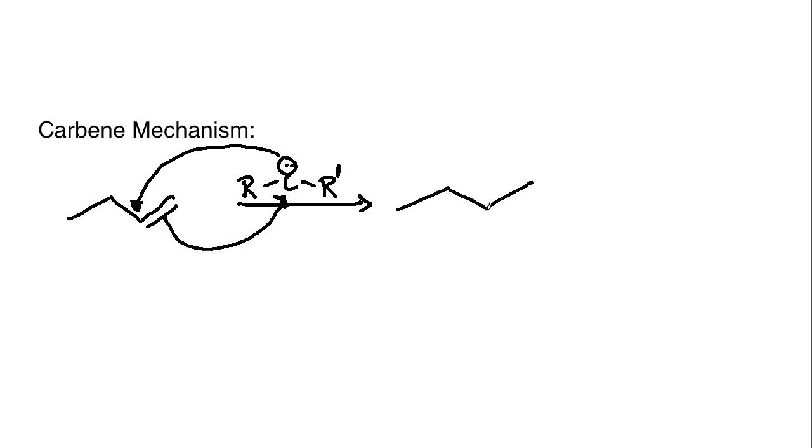Whatever R prime is, we've seen examples where it could be hydrogen or where it could be chloro. And then, you would still have whatever the H here is and the H here. So, that's a look at the mechanism. Very simple compared to some of the other mechanisms we've been looking at for alkenes. So, that is it for this particular discussion on carbenes and carbene chemistry with alkenes.